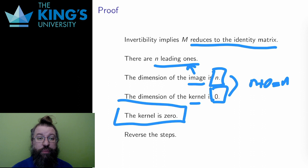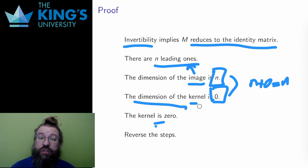This is half the proof. Invertible implies that the kernel is zero. The claim, however, said if and only if. The phrase if and only if means that the implication goes both ways. Invertible, invertibility implies zero kernel, and zero kernel implies invertibility. To prove an if and only if statement, I need to do both directions. In this case, and somewhat frequently for other if and only if statements, I can reverse the steps.